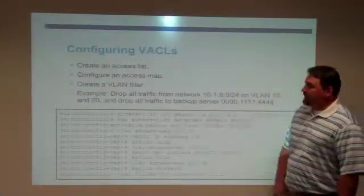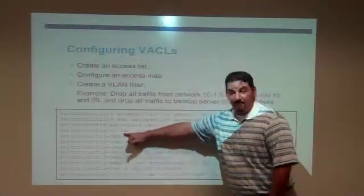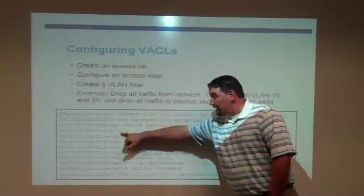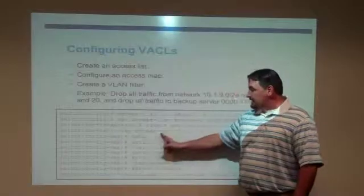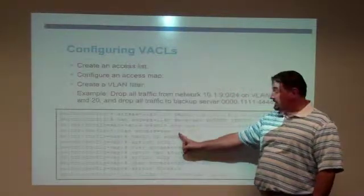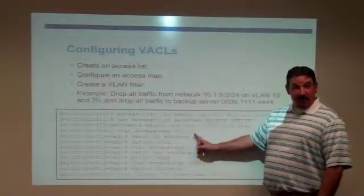So now that we have the matching criteria, I'm eventually then going to create my VLAN access map. So right over here, I go through, again, notice I'm in global config, and I say VLAN access-map, and I name it XYZ, and I put in a sequence number, sequence number 10.